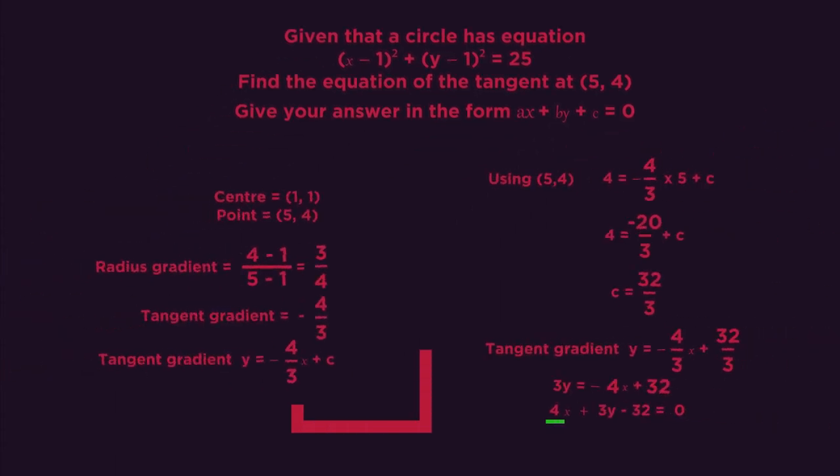Did you get 4x plus 3y minus 32 equals 0?